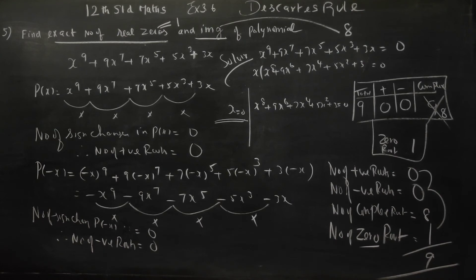x = 0 is a real root — that is a real answer. But all the other answers are complex roots. The maximum number of positive roots is 0 — that is correct. Negative is also correct.